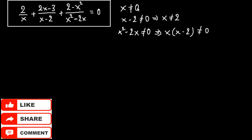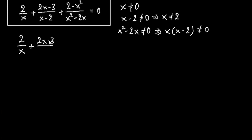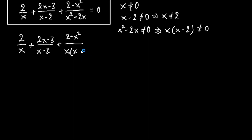So if we find a solution x equals 0 or x equals 2, we must reject it. Let's rewrite: we have 2 over x plus 2x minus 3 over x minus 2 plus 2 minus x squared over x squared minus 2x, where x squared minus 2x can be written as x times x minus 2, equals 0.